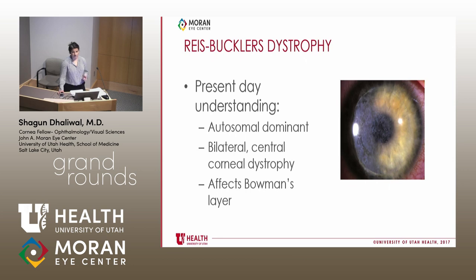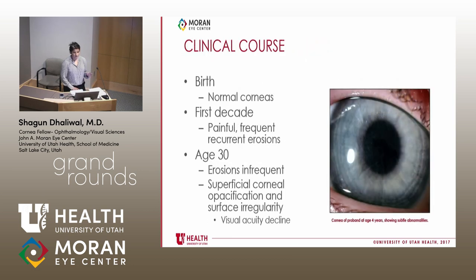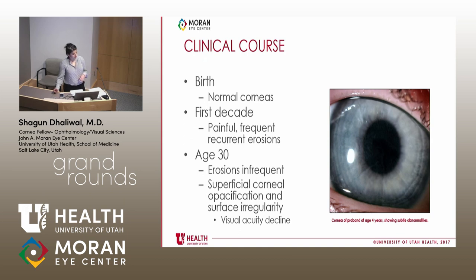We understand this disease to be autosomal dominant inherited — a bilateral central corneal dystrophy that primarily affects Bowman's layer. The clinical course is much as described in 1917 and 1949. At birth, patients have normal corneas, and within the first decade of life they present with painful, frequent recurrent erosions. By age 30, the erosions have remitted and patients develop superficial corneal opacification and surface irregularity, which causes visual acuity decline. The image shown is of a four-year-old patient — on first glance the cornea looks normal, but at the pupillary margin you can notice fine reticular opacities.